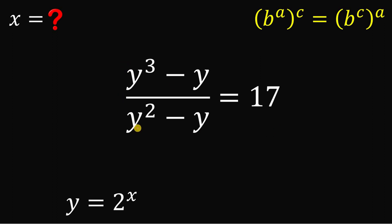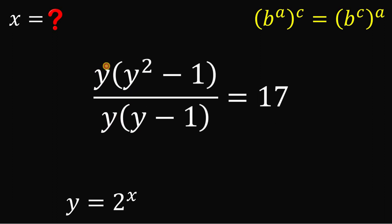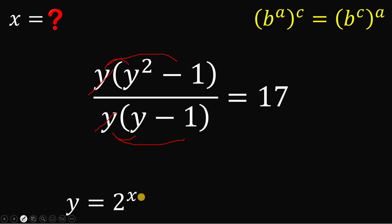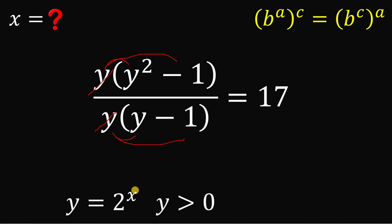On the numerator and denominator we can factor out y. The numerator becomes y multiplied by y squared minus 1, and the denominator becomes y multiplied by y minus 1. We can cancel out y because y equals 2 raised to the power of x, which is an exponential function, so y must be greater than 0 — meaning y is not equal to 0.